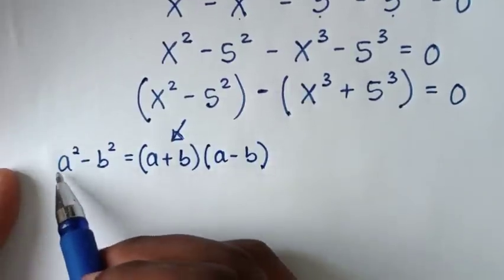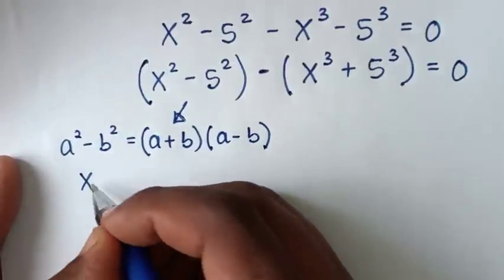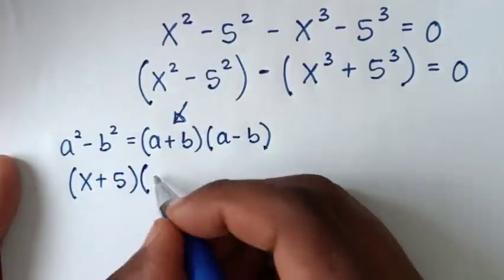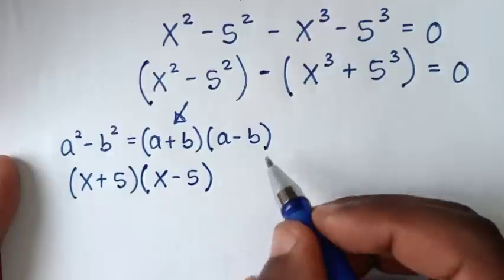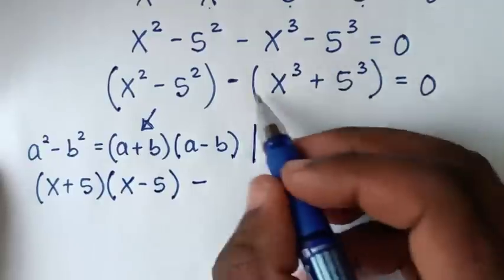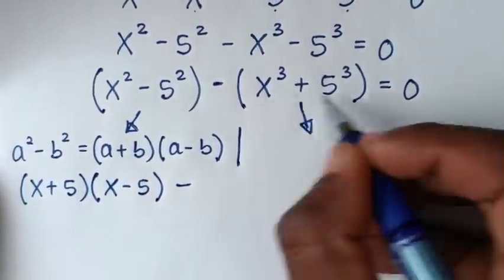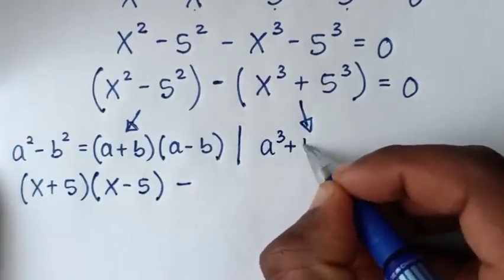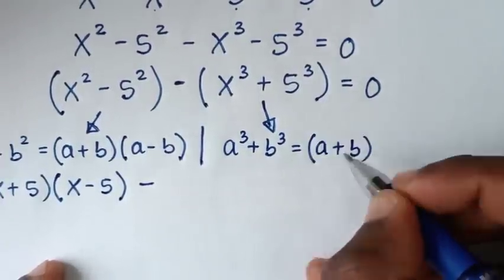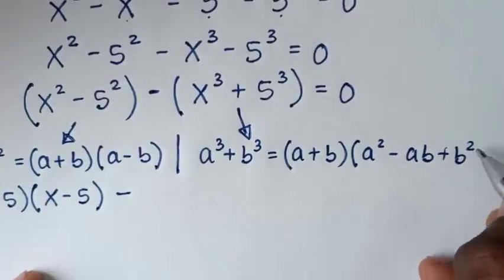So from this rule, we'll apply the form: a plus b gives x plus 5, and a minus b gives x minus 5. Then this part inside the bracket is in the form of a perfect cube, so we'll apply the perfect cube rule, where this is in the form of a power 3 plus b power 3, which is equal to a plus b bracket, a squared minus ab plus b squared bracket.